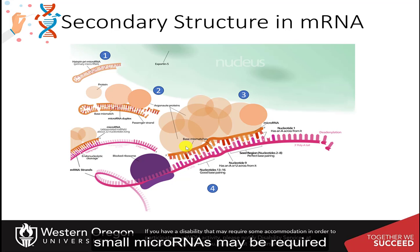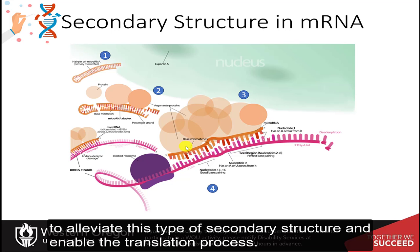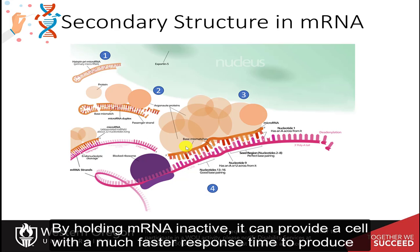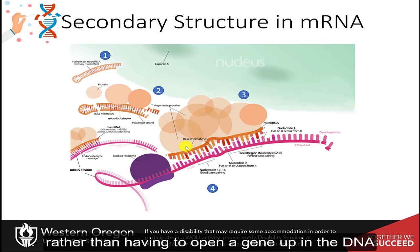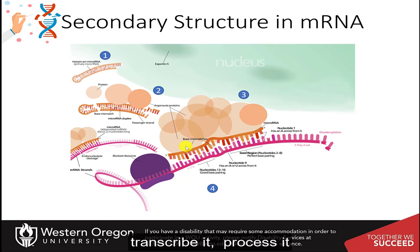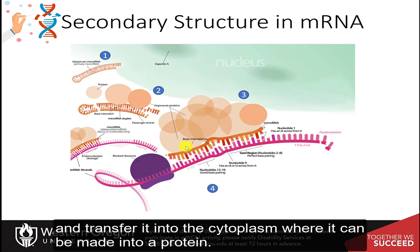Small microRNAs may be required to alleviate this type of secondary structure and enable the translation process. By holding messenger RNA inactive, it can provide a cell with a much faster response time to produce new proteins when they are needed. The messenger RNA can be unfolded and translated rather than having to open a gene up in the DNA, transcribe it, process it, and transfer it into the cytoplasm where it can be made into a protein.